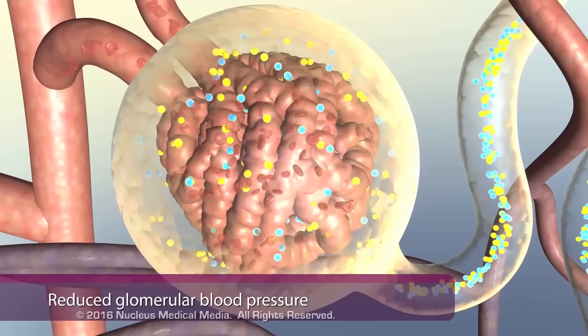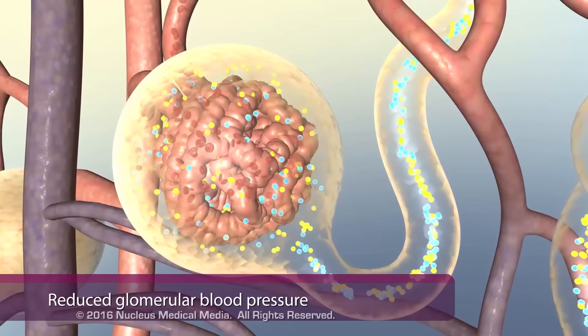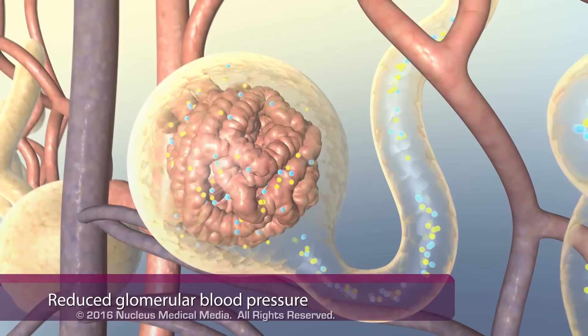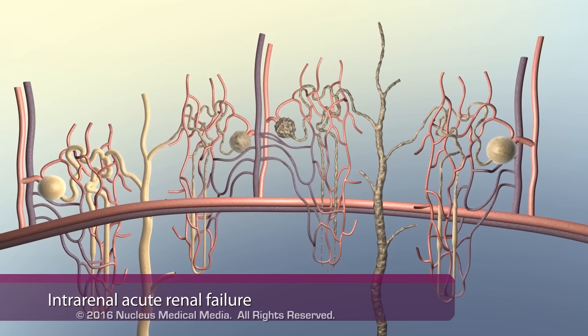Singularly or together, reduced blood pressure and reduced blood volume at the glomerulus result in less filtrate moving into Bowman's capsule. Intrarenal acute renal failure results from damage to nephrons; toxins and lack of oxygen to kidney tissues can damage the nephron.